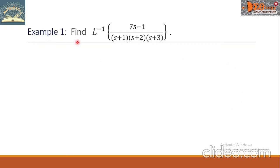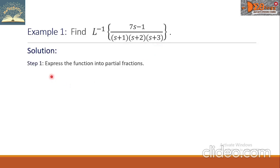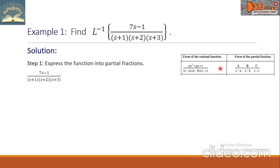Let's see Example 1. Find the inverse Laplace of (7s - 1) all over (s + 1)(s + 2)(s + 3). Step 1 says express the function into partial fractions. We can see that the fraction is of the form that gives us a/(s+1) + b/(s+2) + c/(s+3). Let's consider this to be equation 1.